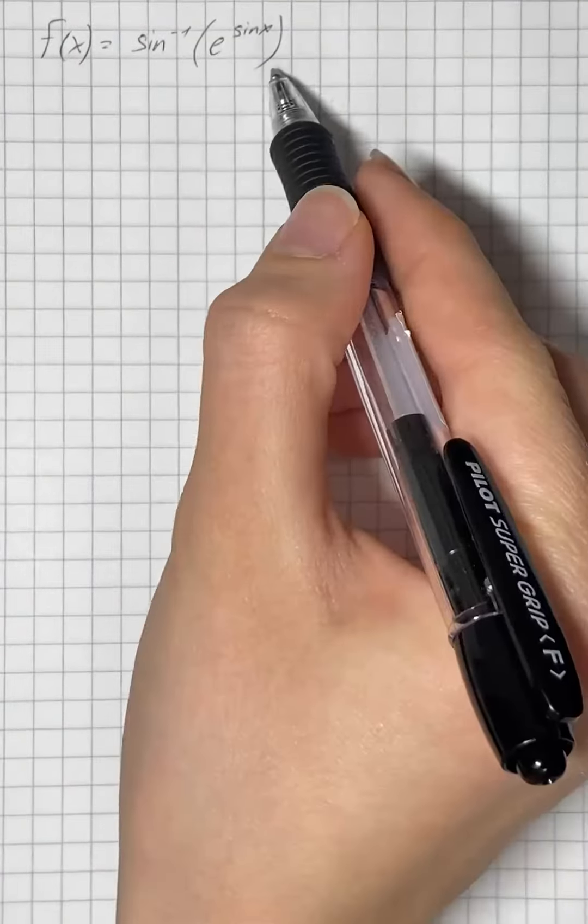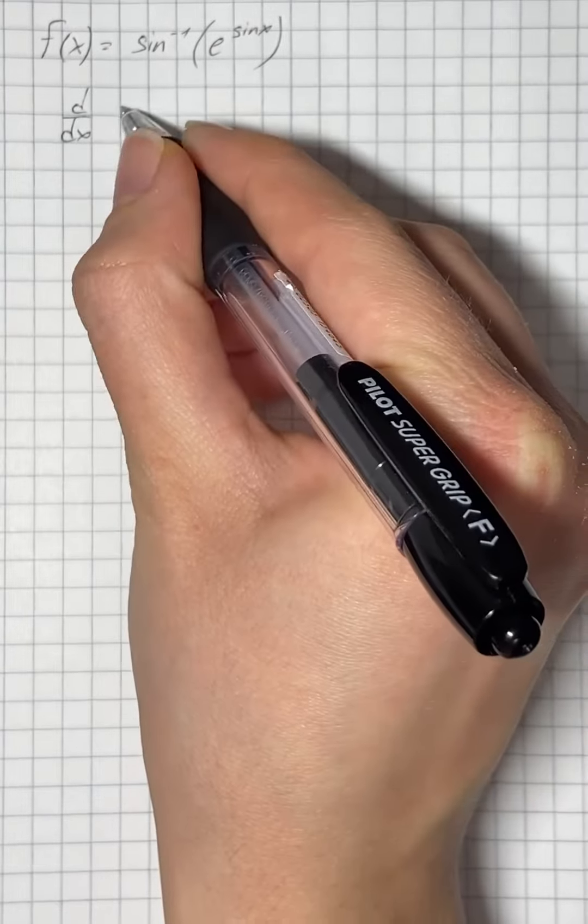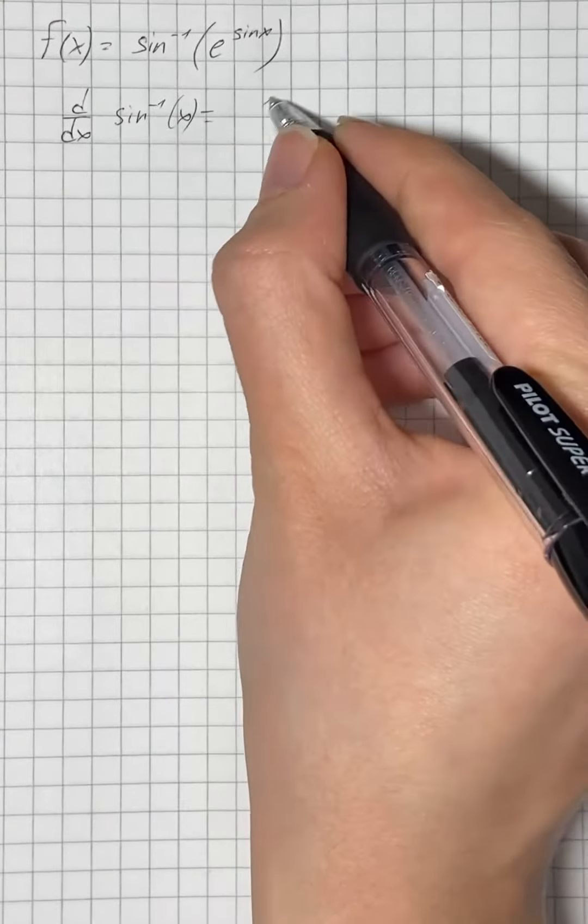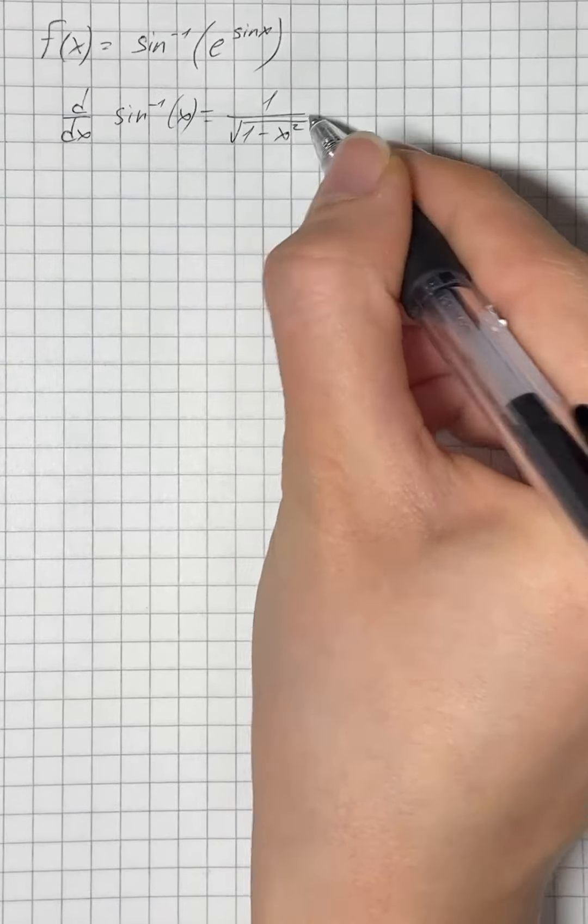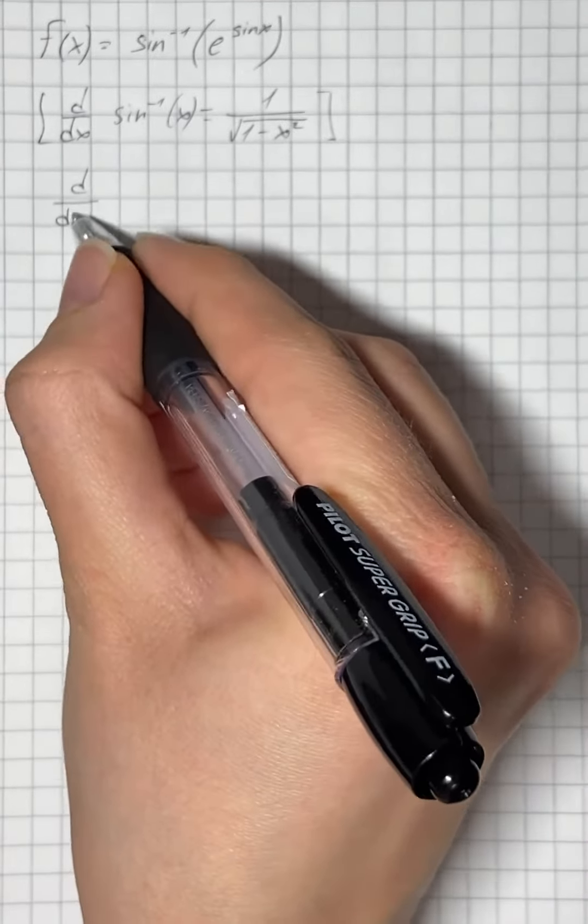We need to find the derivative of a given function. We know that the derivative with respect to x of sine inverse, or arcsin of x, equals 1 over the square root of 1 minus x squared.